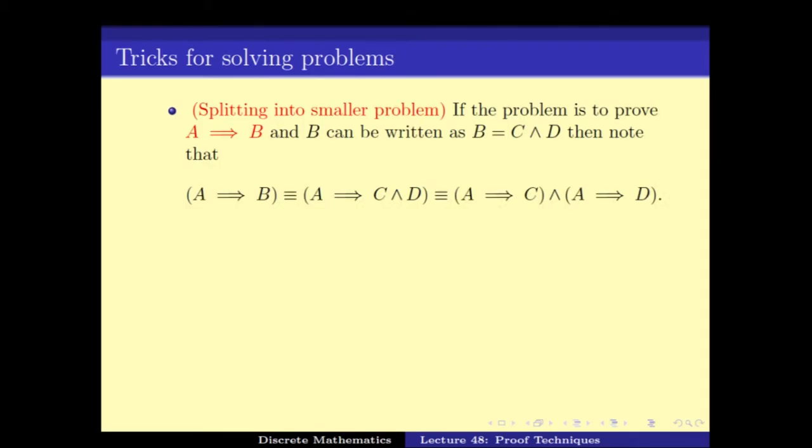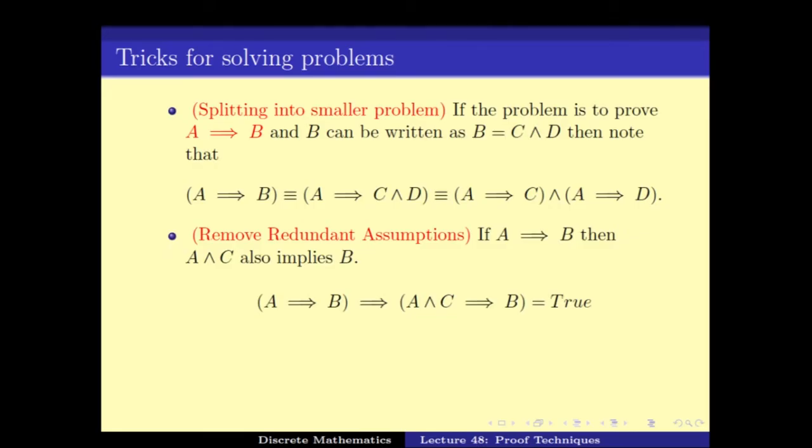I am not going to go through these problems line by line and just going to revise them. Just for example, if B can be written as C and D then we could split up into smaller problems. Similarly, there might be some redundant assumptions inside A that can be removed and sometimes proving something stronger can actually be easier to prove.